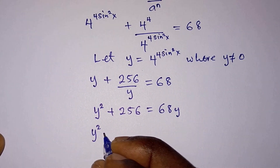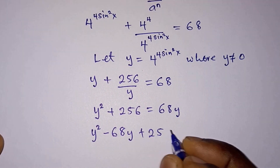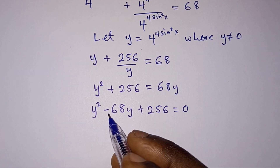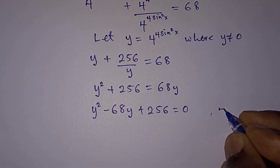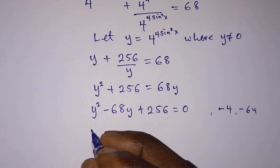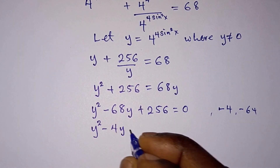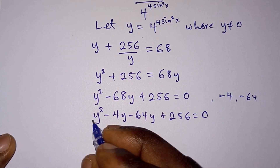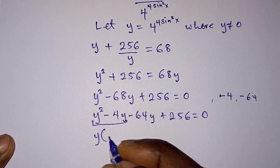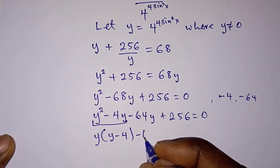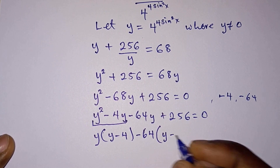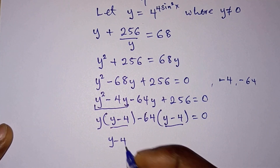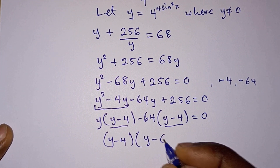We have a quadratic equation, so equating everything to zero: y squared minus 68y plus 256 equals 0. We look for two factors that multiply to positive 256 and sum to negative 68 — those are negative 4 and negative 64. The equation becomes y squared minus 4y minus 64y plus 256 equals 0. Factoring: y(y minus 4) minus 64(y minus 4) equals 0.